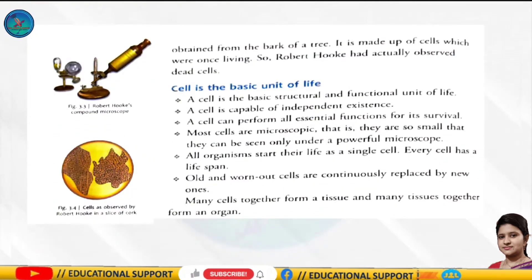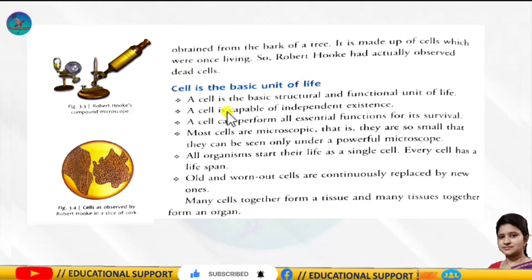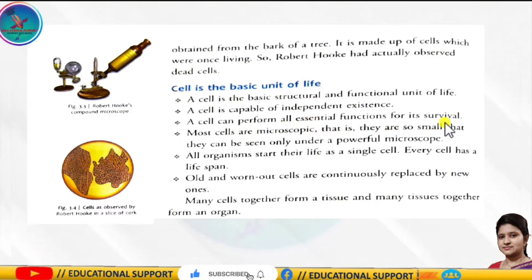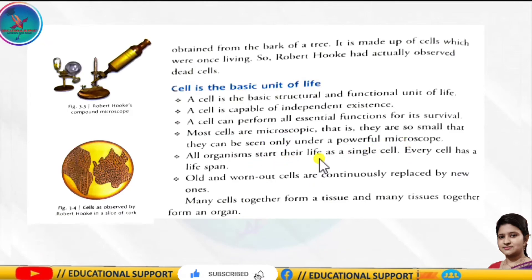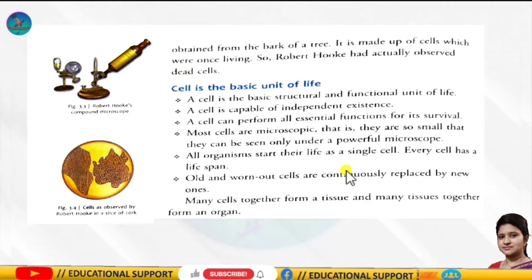A cell is the basic structural and functional unit of life. A cell is capable of independent existence and can perform all essential functions for its survival. Most cells are microscopic — they can be seen only under a powerful microscope. All organisms start their life as a single cell, and every cell has a lifespan, so old cells are continuously replaced by new ones.